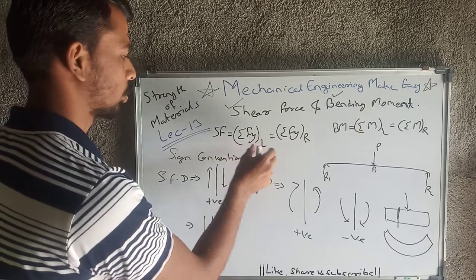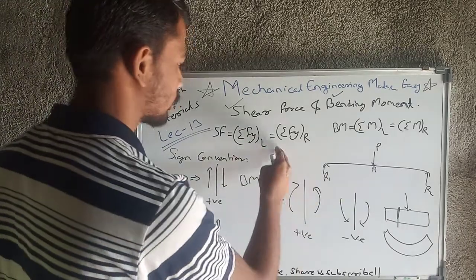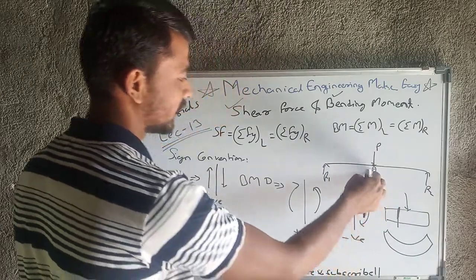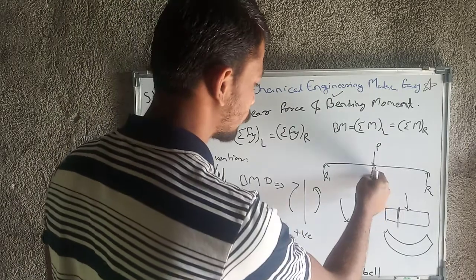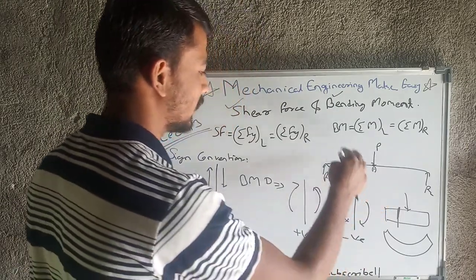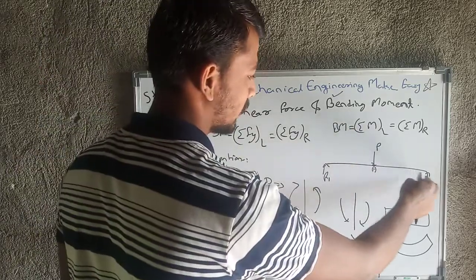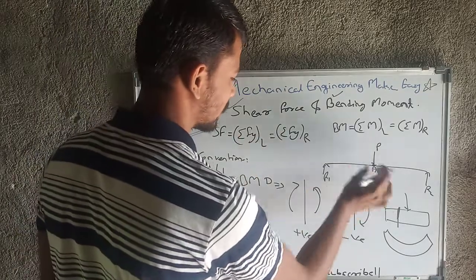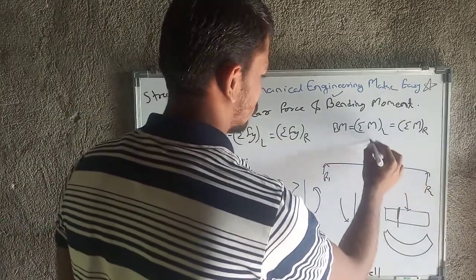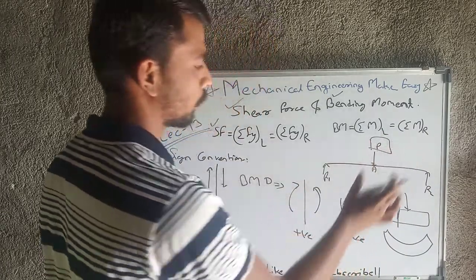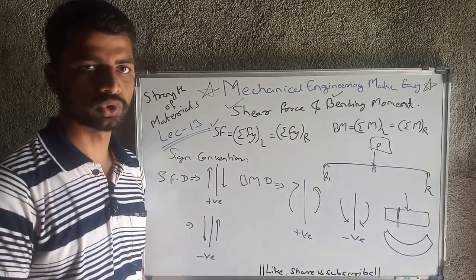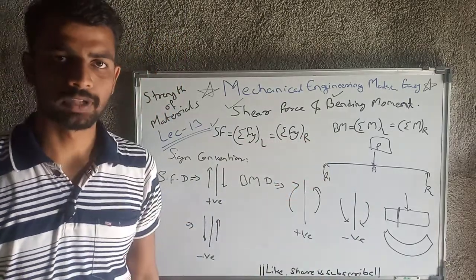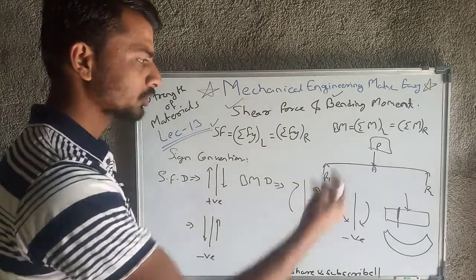Shear force has the formula: summation of Fy on the left side, or summation of Fy on the right side. For example, if there is a beam with a point load P at point A, to calculate shear force at point A, we take summation of all forces in the Y-direction on the left side of point A, or we consider the right side. The shear force at point A equals R1, calculated using equilibrium: summation of Fx = 0 and summation of Fy = 0.